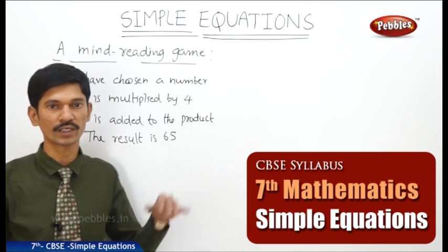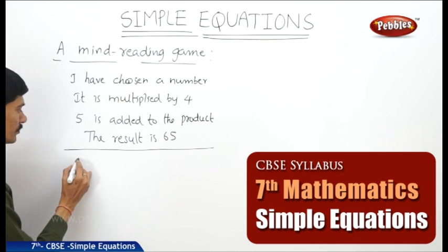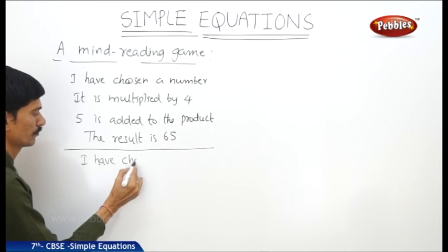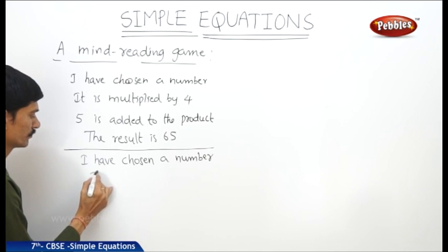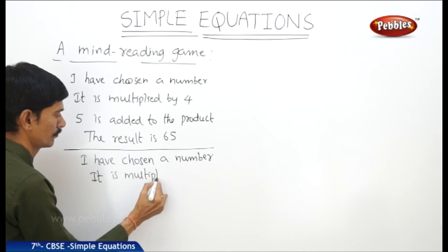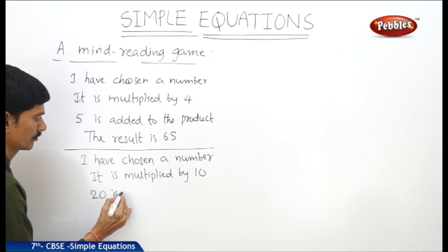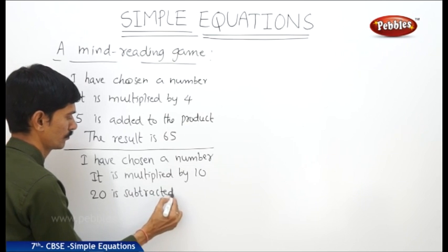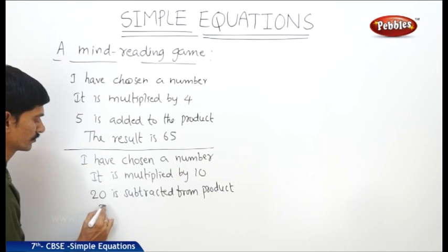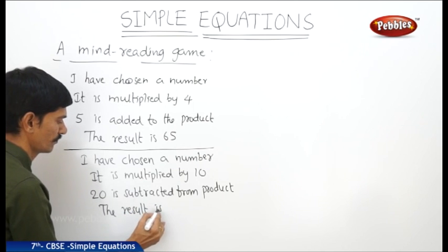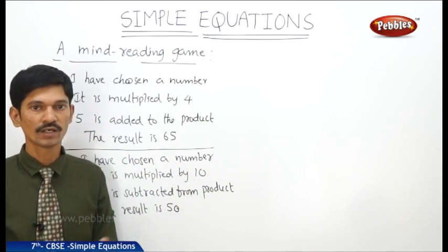Then the result is 65. Now what is the number? Can anybody guess the number I have chosen? Let us take another game. Here also I have chosen a number. It is multiplied by 10 and 20 is subtracted from the product, then the result is 50. How to find the number I have chosen?